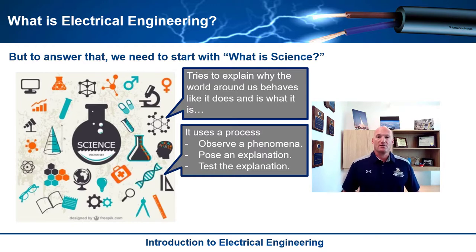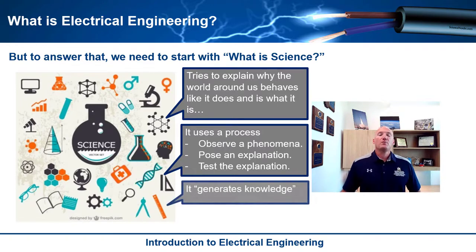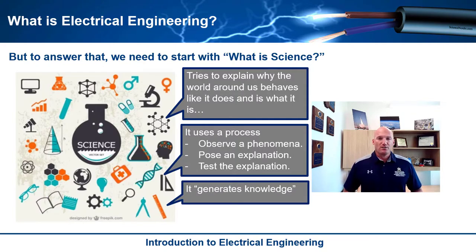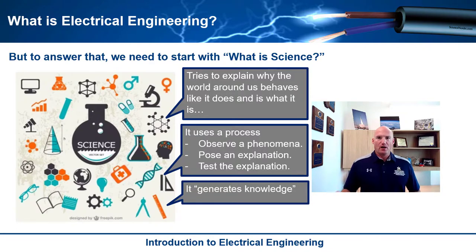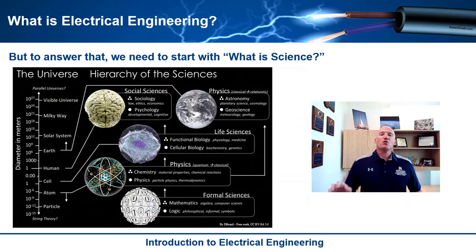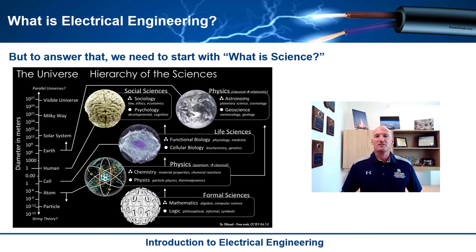You can predict what will happen in the future based upon the mathematical models that scientists come up with. When you really break down what science is, they're generating knowledge about how the world works — but they stop with the generation of knowledge. They just say: here's an explanation of how the world works.